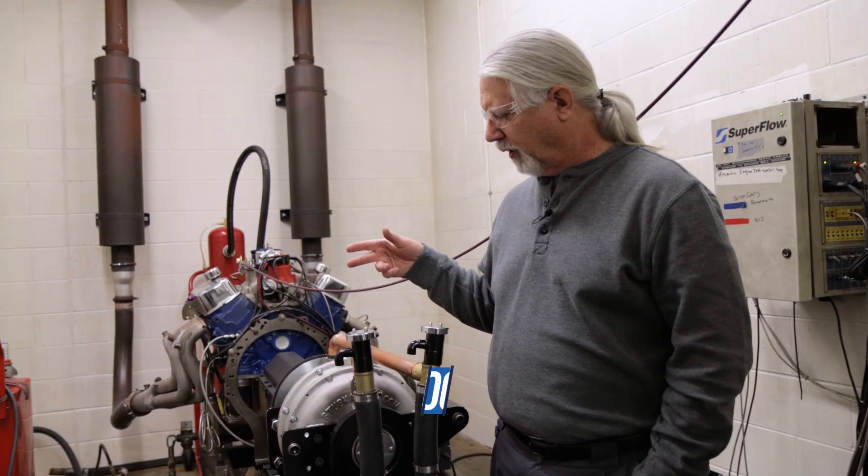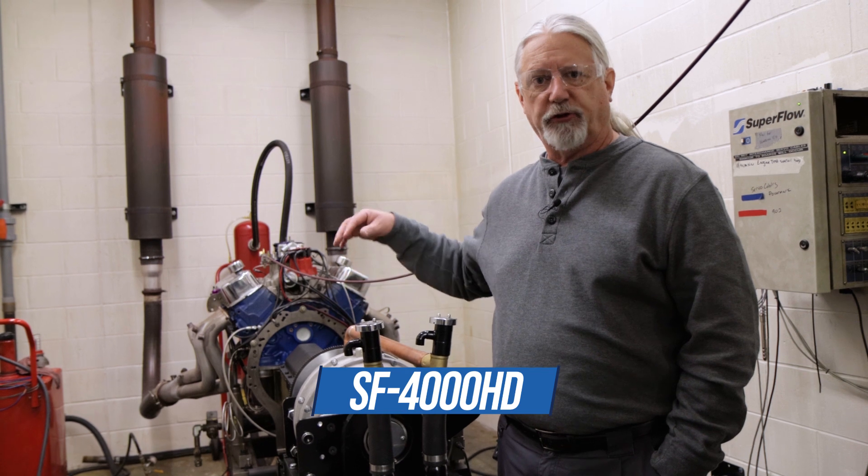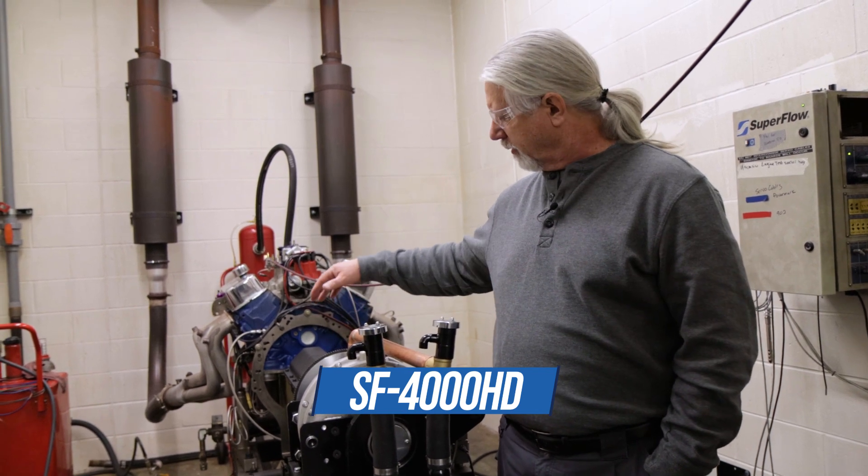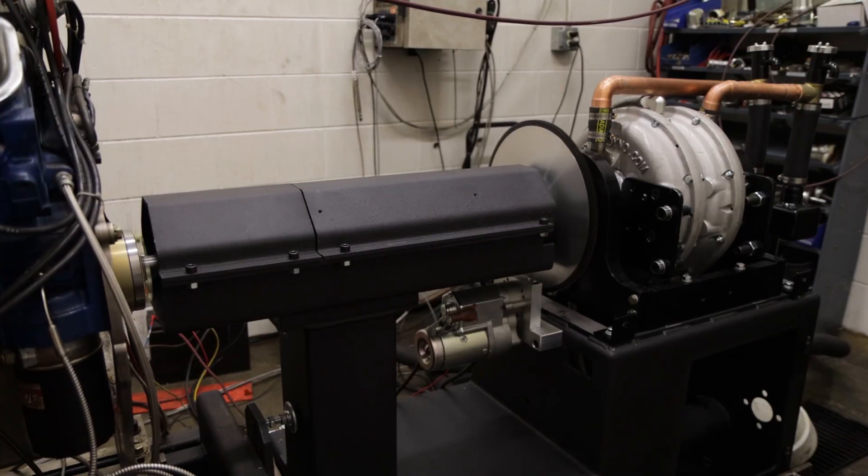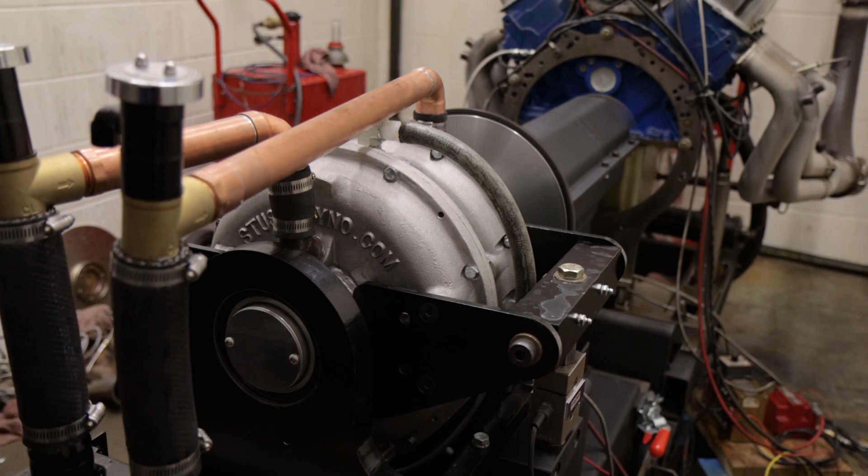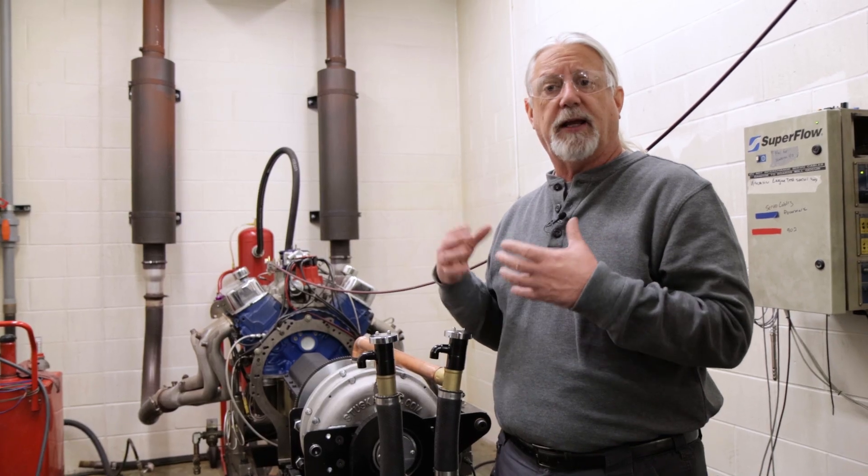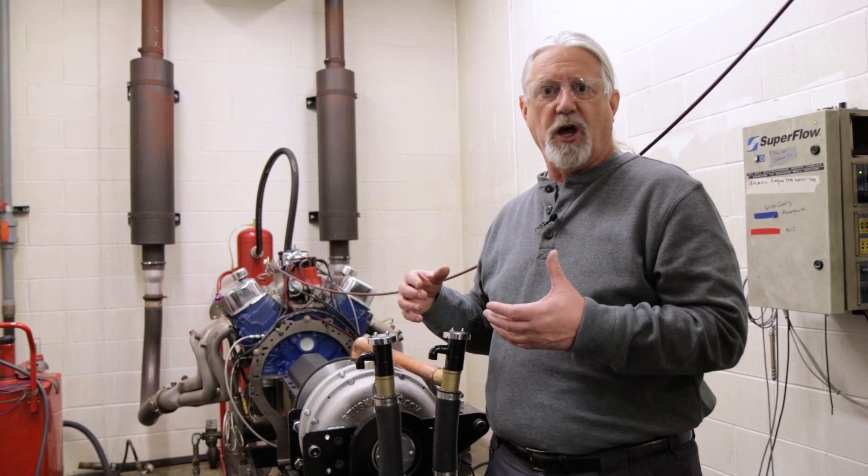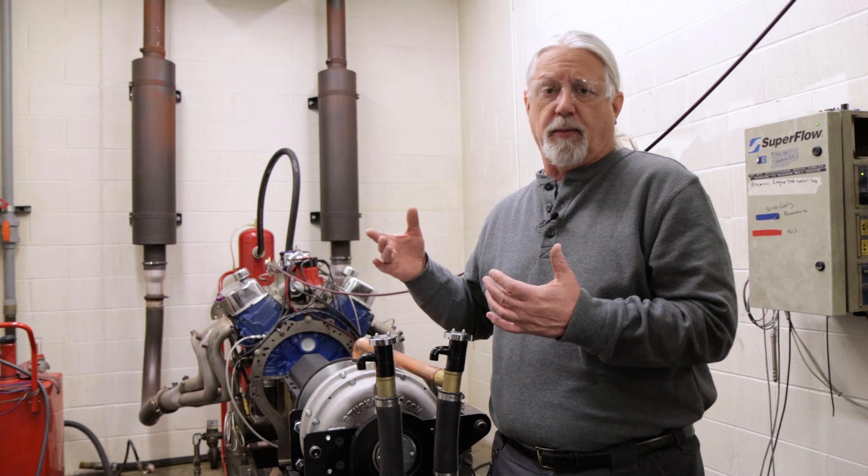This is our new 4000 HD water brake absorber. It's a dual rotor application using Stutzka water brakes, and we've got two of them paired together. The idea behind this dyno is to sell it into a market that wants to do really powerful engines, 2,000 plus horsepower, so the idea is to give them a brake